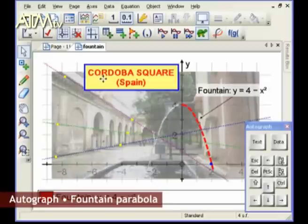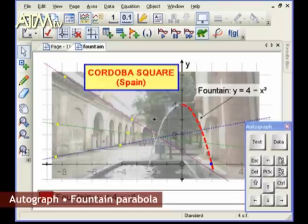OK, let's have a look at this lovely picture of Cordoba Square in Spain and see if we can see some parabolas. Well, indeed we can. The fountain, of course, is parabolic.